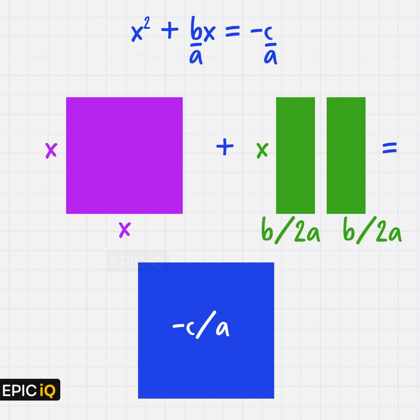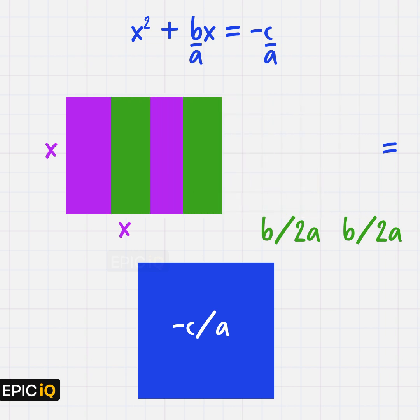We now move these rectangles and add to the x square by matching the side x with side x.